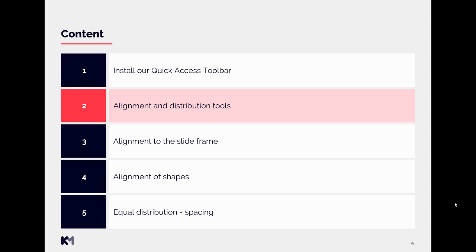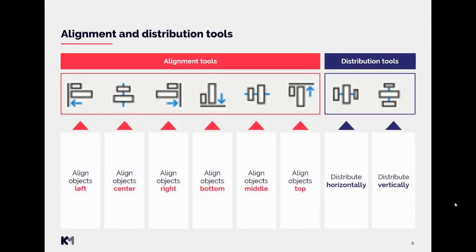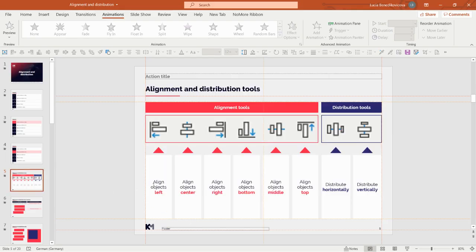Now that you have our quick access toolbar, we can talk about alignment and distribution tools. The first six are alignment tools and the last two are distribution tools. You can find out what each does by putting your cursor on top of the function and it will pop up with a description. We will also showcase in more detail how these tools work.